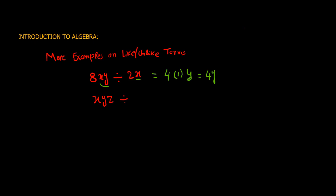Second example: xyz divided by xy. It is easier to write this in fractional form — xyz over xy. Now you can easily see that the x cancels with x, and both y's cancel out, since y divided by y is 1 and x divided by x is 1. So the answer is simply z.